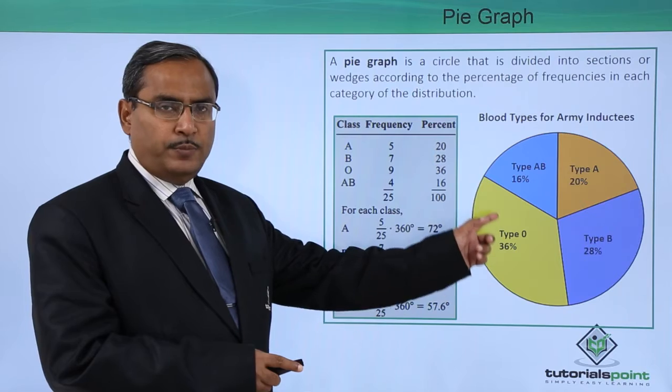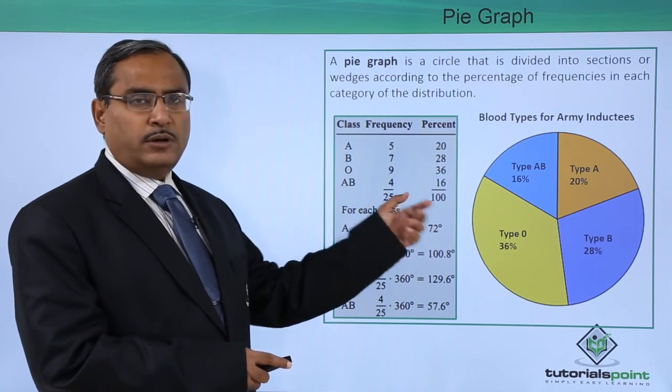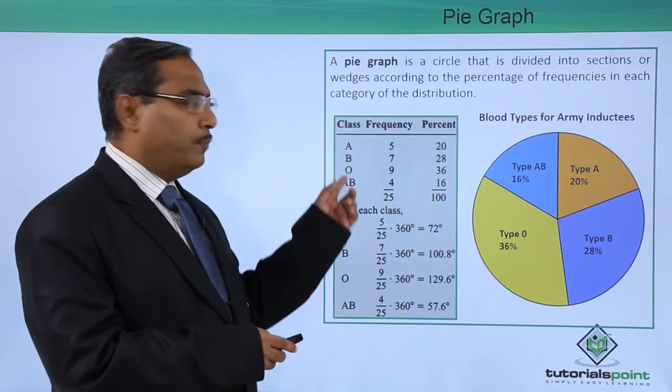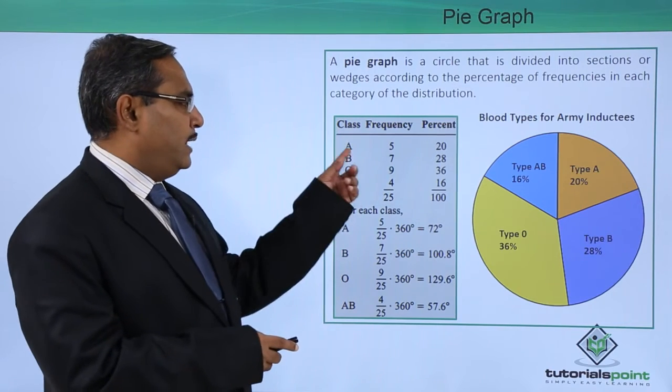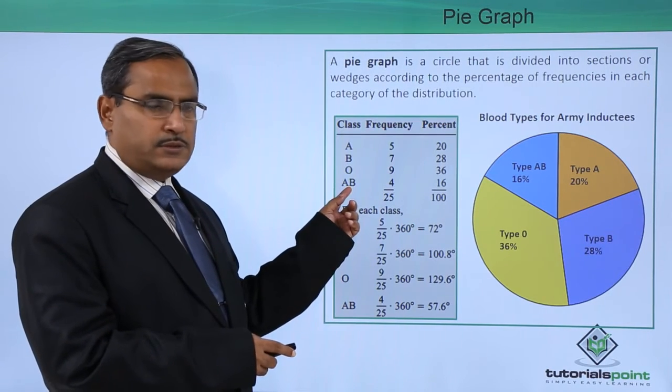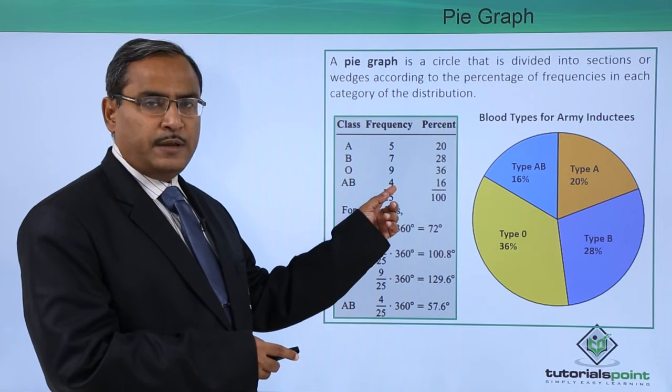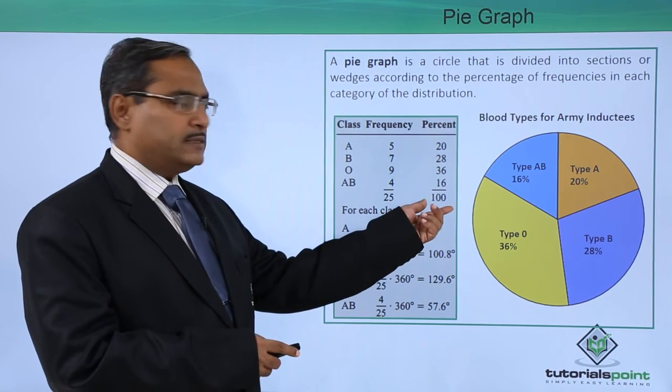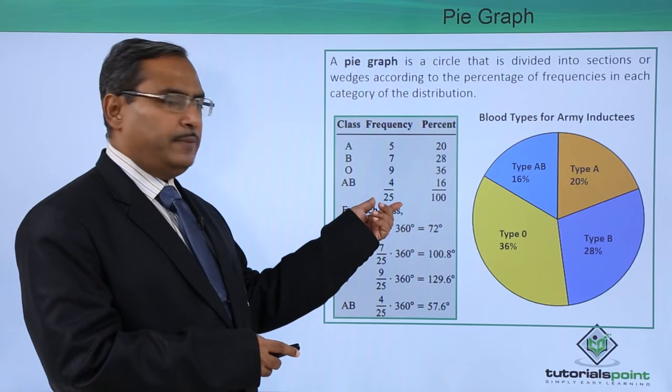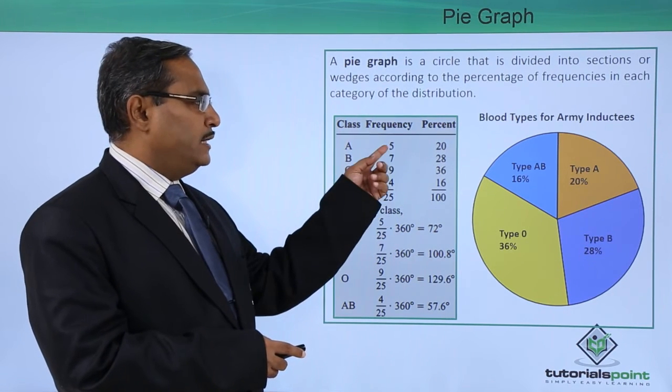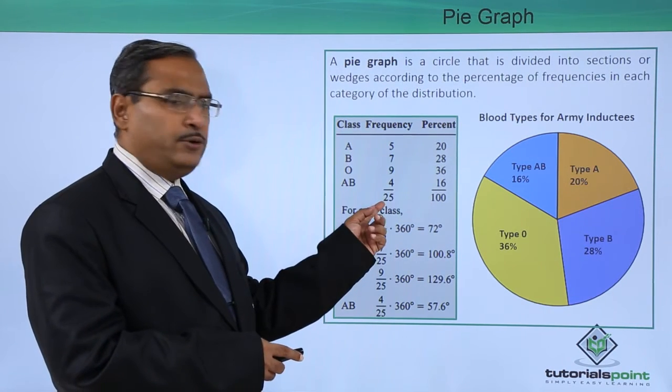That 360 degrees will be divided according to the frequency or the percentage of frequency of these classes. Here we are having the respective class names, frequencies, and percentage frequency. Percentage frequency can be calculated in this way: 5 into 100 divided by 25.